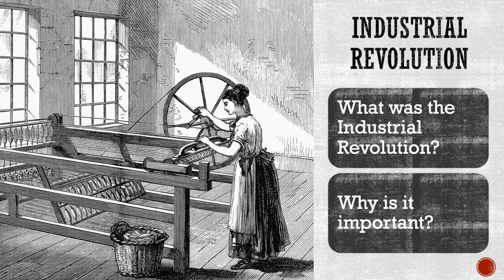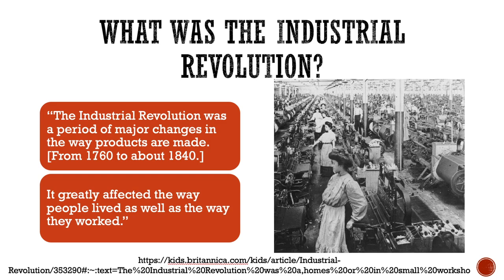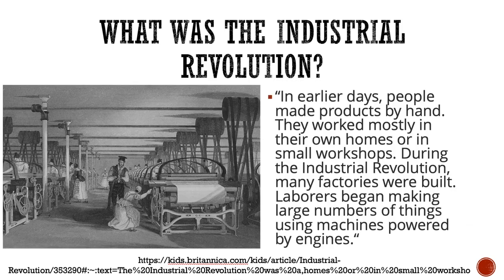So what was the Industrial Revolution and why was it important? The Industrial Revolution was a period of major changes in the way products are made, from 1760 to about 1840. It greatly affected the way people lived as well as the way they worked. In earlier days, people made products by hand and worked mostly in their own homes or in small workshops. During the Industrial Revolution, many factories were built, and laborers began making large numbers of things using machines powered by engines.